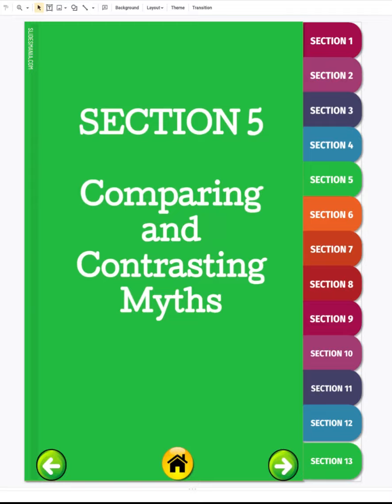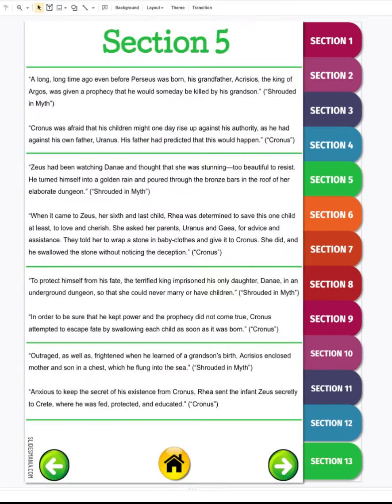Those objects could be stories. So what we're going to do is on page 15 of your interactive notebook, we are going to be comparing the Shrouded in Myth story that we read in the first unit to Cronus, finding similarities and differences. I've pulled quotes from each of those myths and we're going to find the similarities and differences between the two.